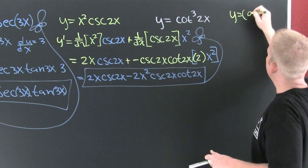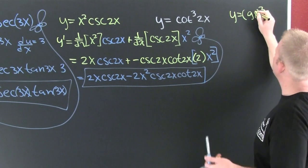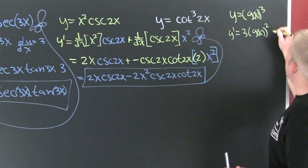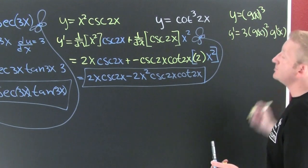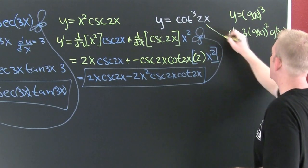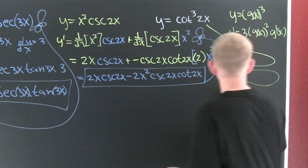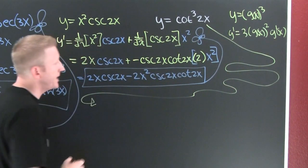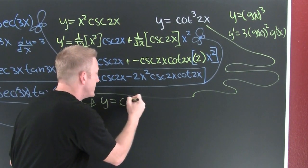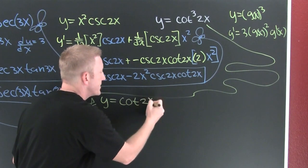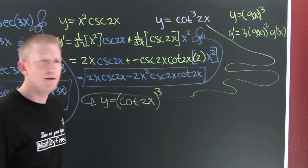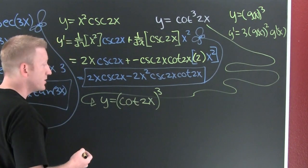For the last example, think of it like: if y equals g(x) to the third, then y prime is 3 times g(x) squared times g′(x) by the chain rule. We'll tackle: y equals cotangent(2x) to the third power — trig notation is notoriously lazy with exponents. So we're looking for the derivative of cot³(2x).